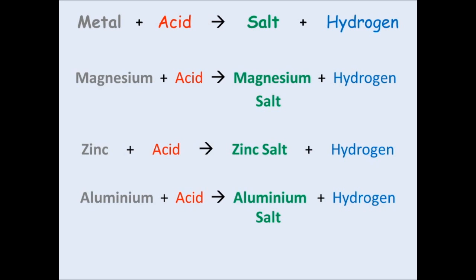The second one, I've just put in zinc instead of magnesium. So you get zinc plus acid makes zinc salt and hydrogen. And the third one just follows the same trend. Aluminum plus acid makes aluminum salt and hydrogen.